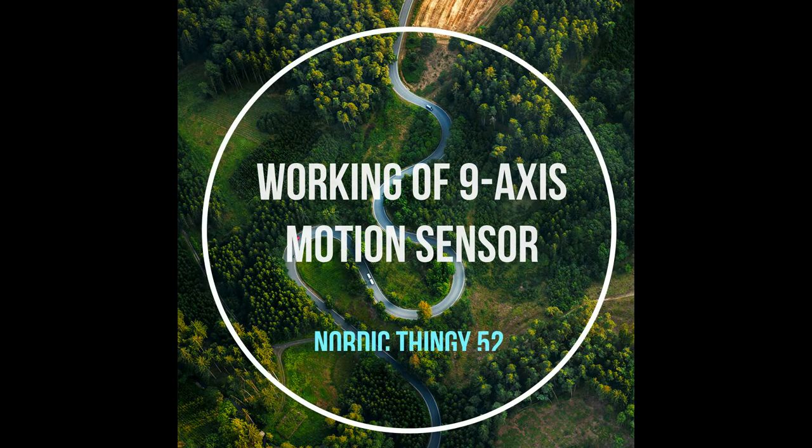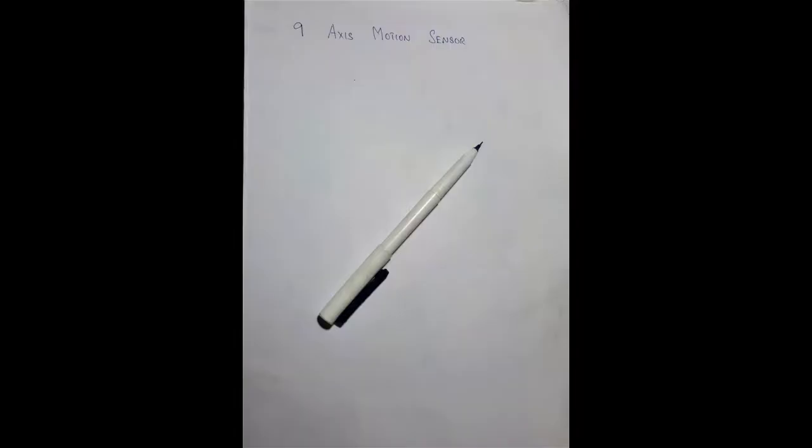Good evening everyone. Today we're going to see how the 9-axis motion sensor, the Nordic Thinkie 52 works. First, let's go with the Accelerometer.